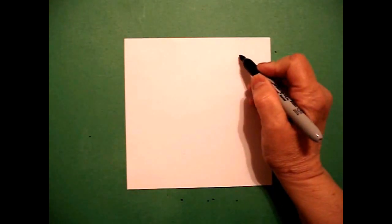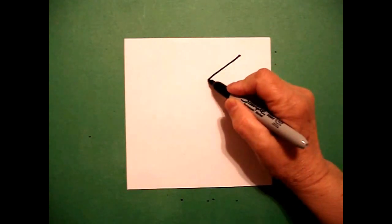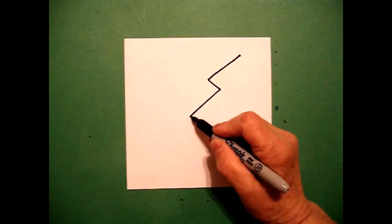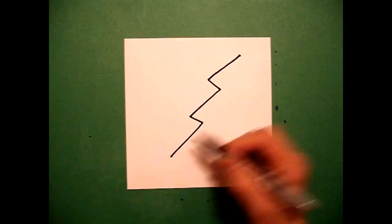Today's project is how to draw a lightning bolt. I'm going to take one finger on the upper right hand side and I'm going to put a dot. And from that dot, I'm going to draw a straight diagonal out, straight diagonal in, straight diagonal out, straight diagonal in, straight diagonal out.